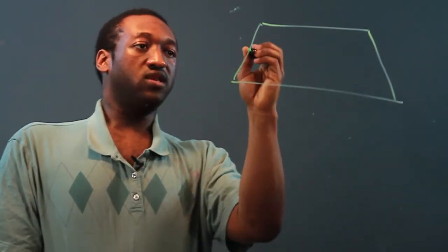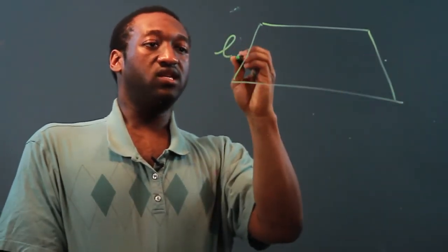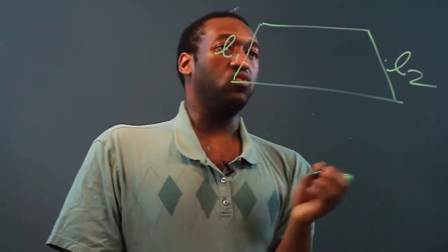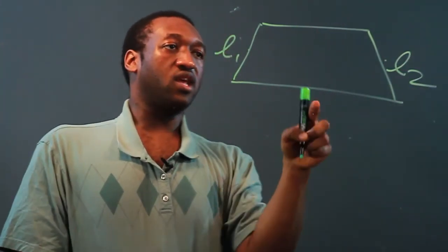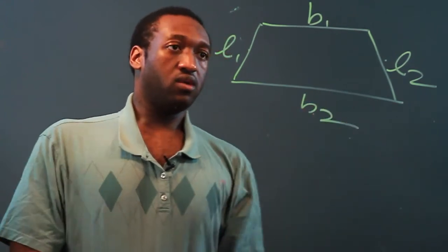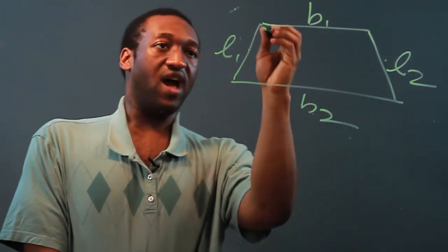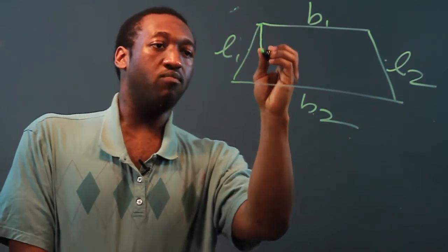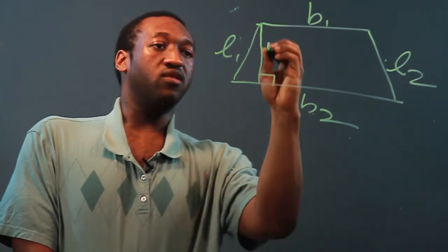So let's call these the legs. Let's say this is leg 1, and that's leg 2, and these, the parallel sides, are the bases. So let's say base 1 and base 2. For a trapezoid, we also have a height, which goes down from one base and is perpendicular to the other base.